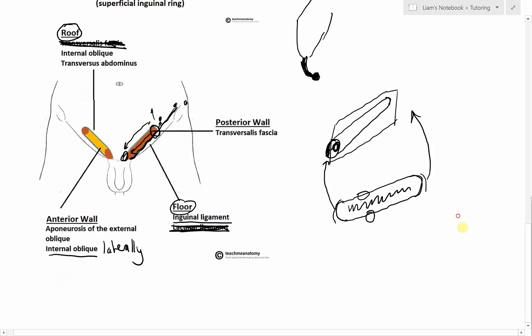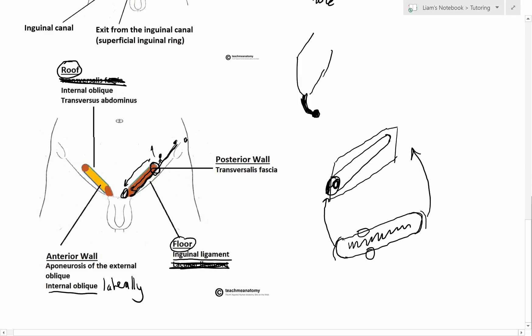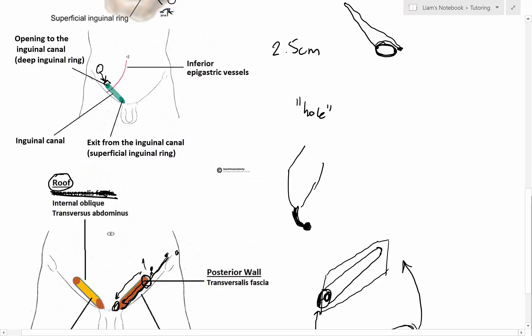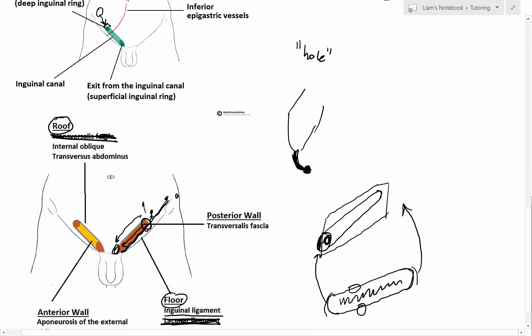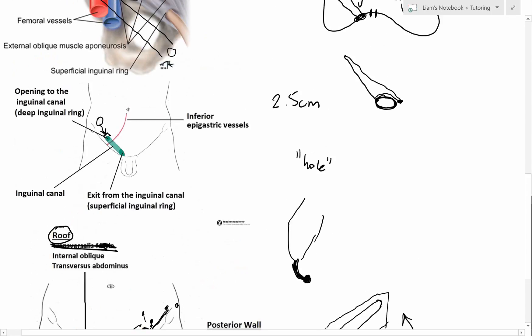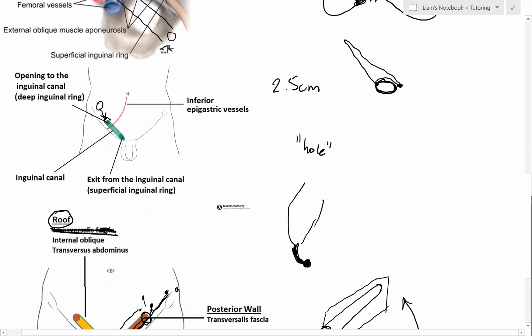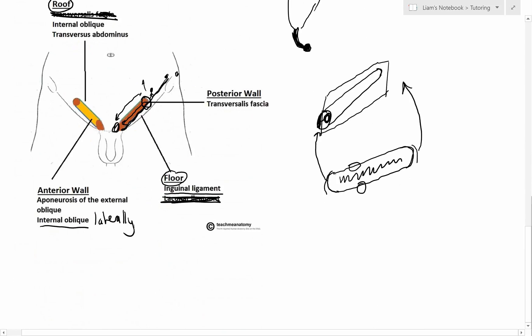I'll leave it here for this video. In the next video we're going to apply these principles when discussing the descent of the testes, so this is the foundational overview. Hopefully now that you know what these structures are, the next video will make a lot more sense. As always, if you have any feedback please leave it in the comments, and there'll be a link to take you on to the next video.